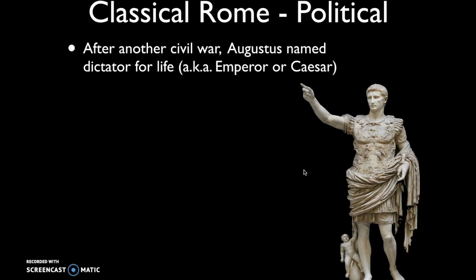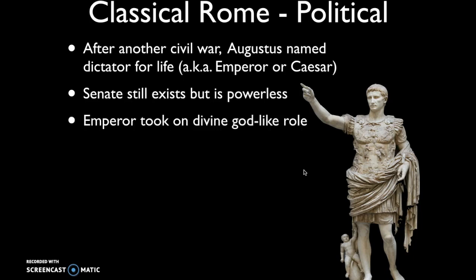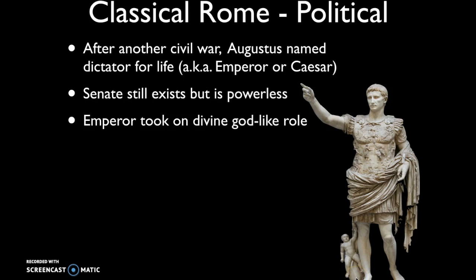Another civil war broke out after Caesar's death, and the winner was Augustus, who became emperor. Roman emperors are referred to as 'Caesars' because they drew upon his example. The Senate still existed at this point but was relatively powerless. The emperor took on a divine, god-like role, as we can see in the statue of Augustus: he has chiseled features, wears a military breastplate suggesting command of the military, and at his leg is Cupid — a Roman god — indicating he associates with gods. Augustus is also not wearing shoes, which is suggestive of his divine, god-like status.